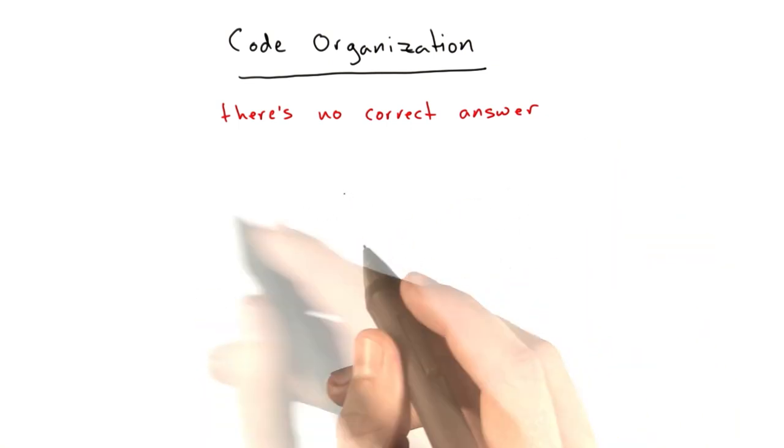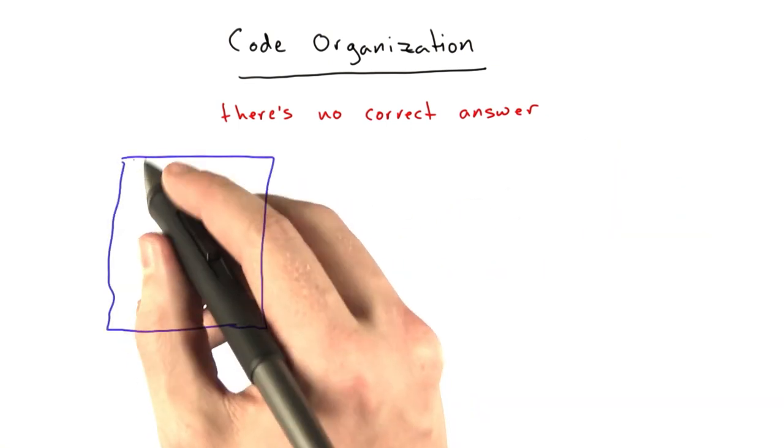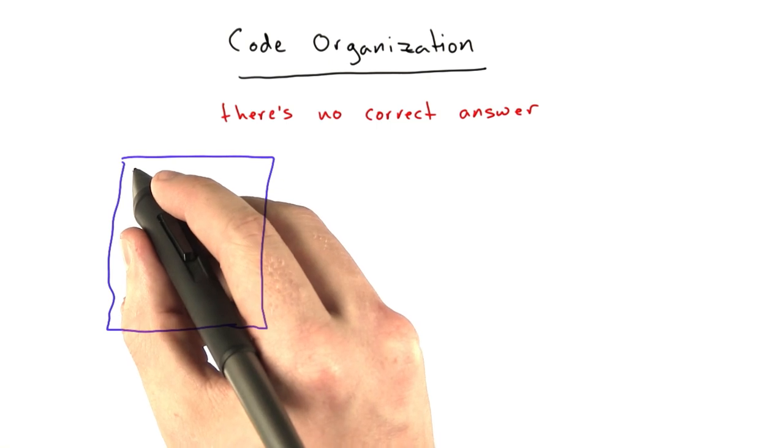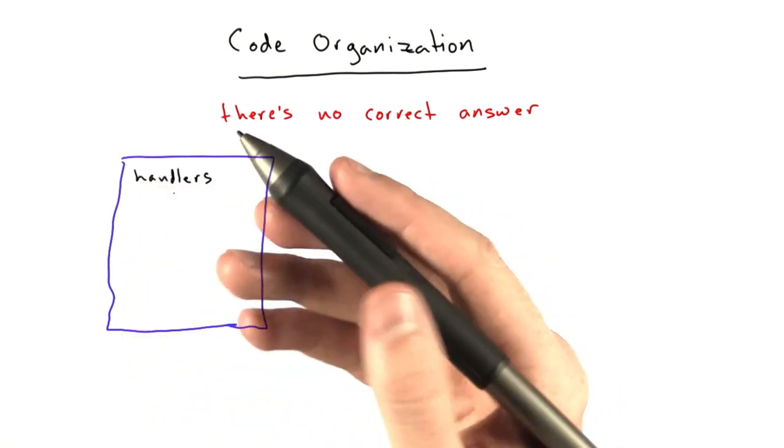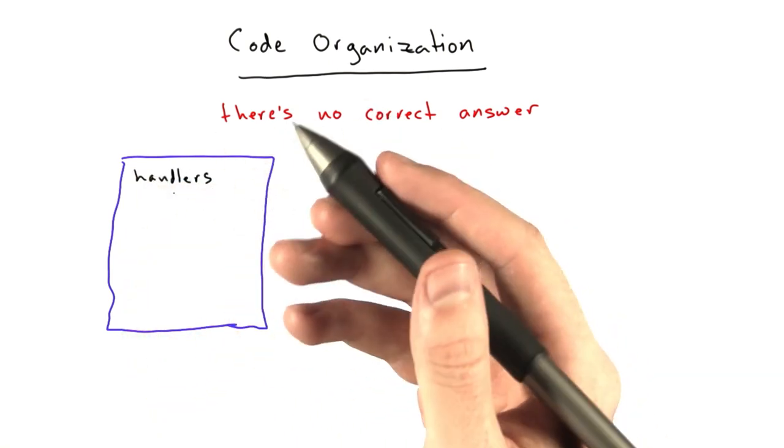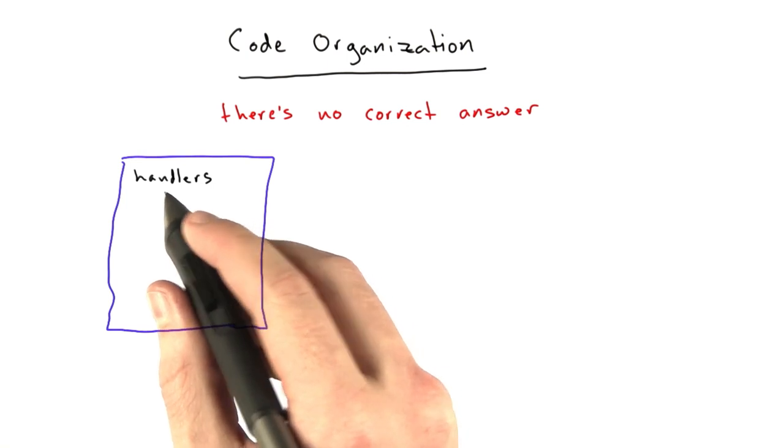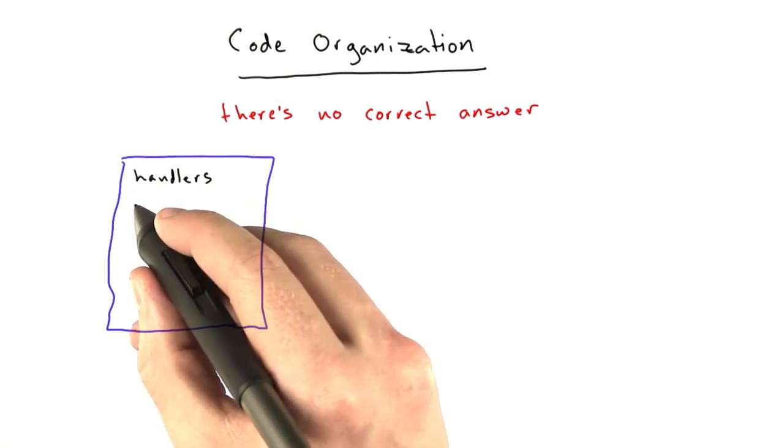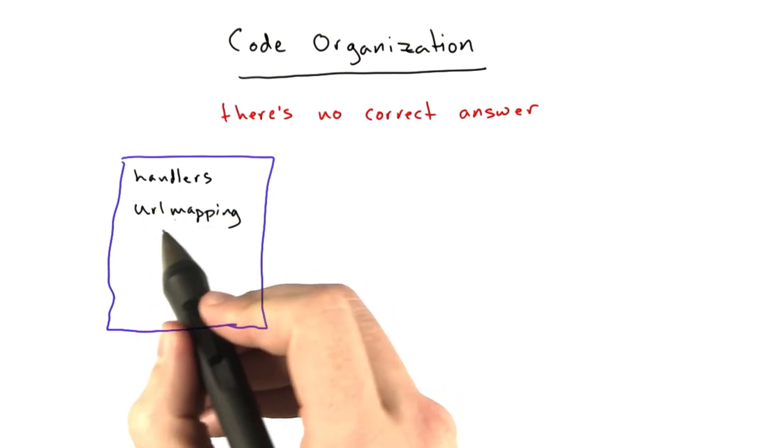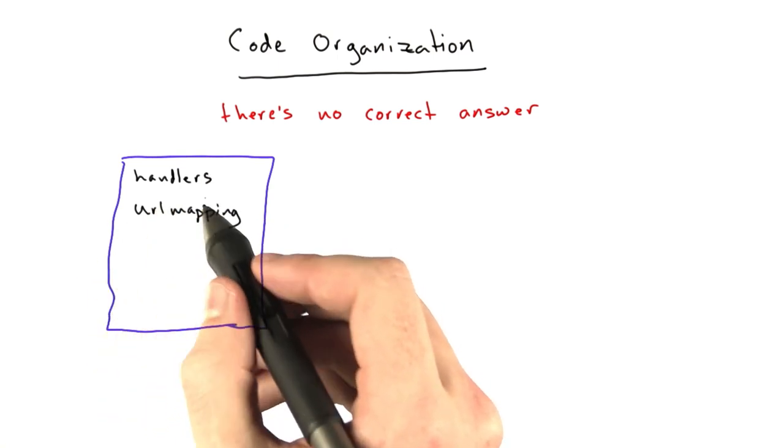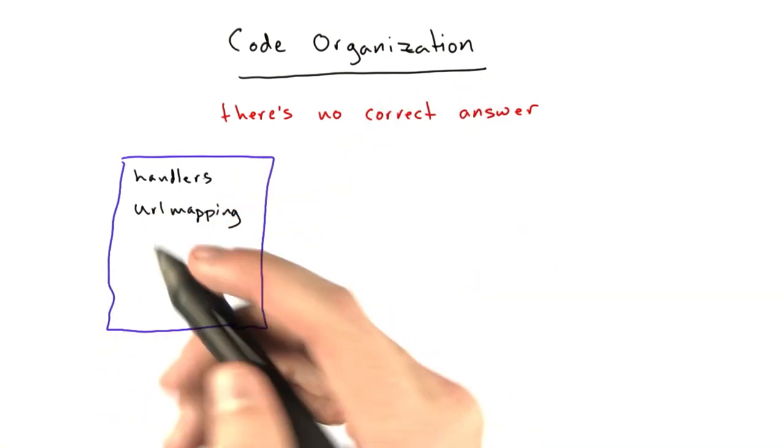When I'm building a web app, generally things start off in one file. In this file, we probably have a section for handlers. These are the classes that define what we do when a particular URL is hit. Almost every framework I've worked in has this notion of a handler and URL mapping. This maps a URL to a particular handler. We've dealt with this a lot in this lecture.